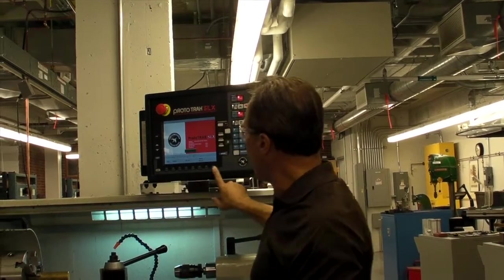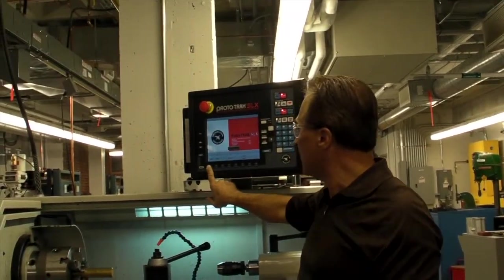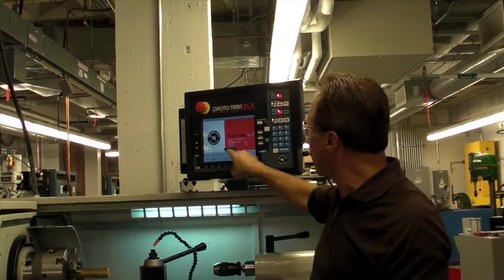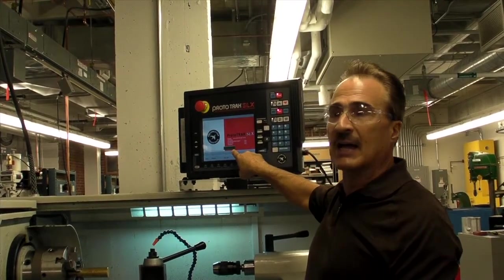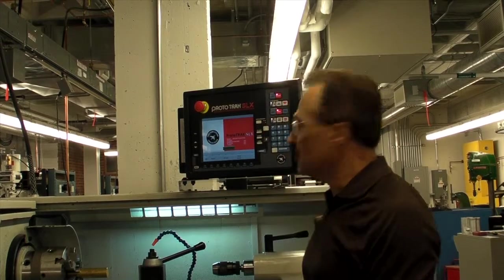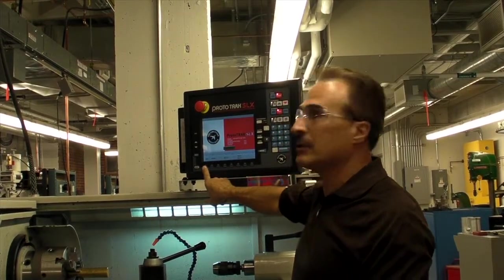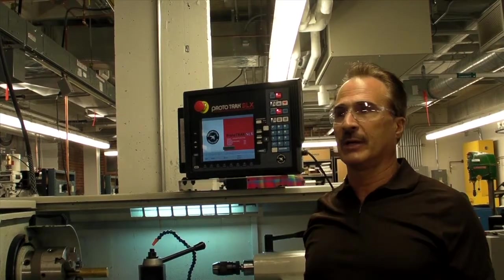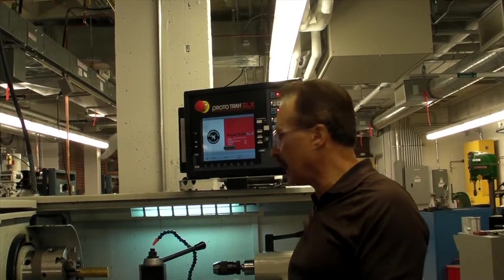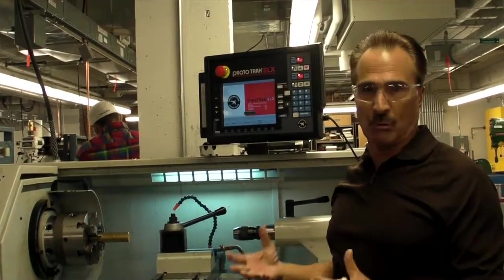So while we're looking at the keypad here, on page one of the book, the main menu, you have different modes of operation. You're going to have this green dialog box always asking you to select the function. So select the mode of operation: digital readout, it's a manual machine. You're able to come in there and machine the workpiece without programming.